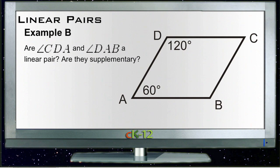All right, let's take a look at Example B. Example B asks if angle CDA and angle DAB are a linear pair and if they are supplementary.